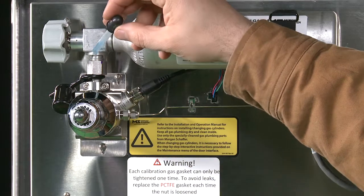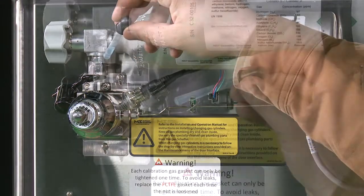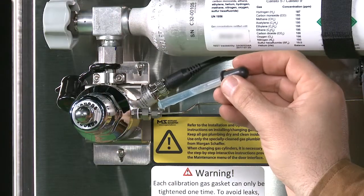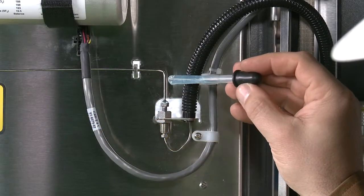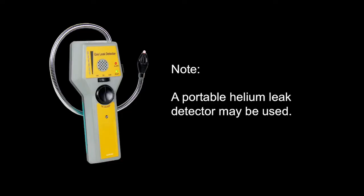If a leak checking fluid such as SNOOP or CalBlue is available, it is recommended to check the accessible fittings, particularly those that have been connected in the field. Alternatively, a portable helium leak detector may be used to sniff for leaks around the fittings on a windstill day.